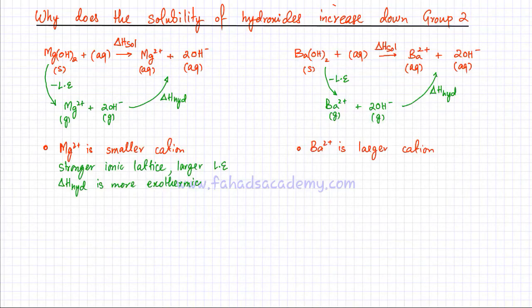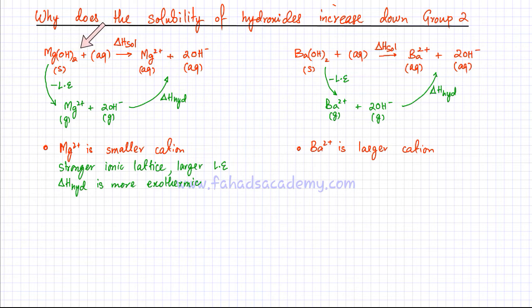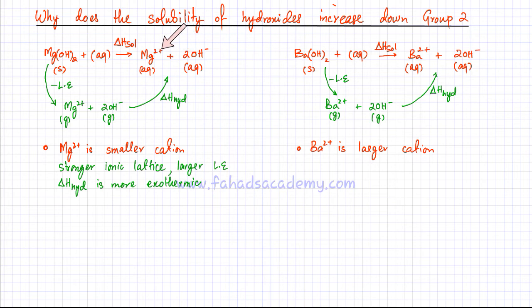In this lecture, I'm going to describe why the solubility of hydroxides increases down Group 2. We discussed previously that magnesium hydroxide was very insoluble. I've picked two elements, magnesium and barium in Group 2. Barium is at the bottom of Group 2 and magnesium is right at the top. This is the equation for dissolving magnesium hydroxide — its enthalpy is called the enthalpy of solution. Magnesium hydroxide is solid and when mixed in water it dissociates to form aqueous ions: Mg²⁺ and OH⁻.